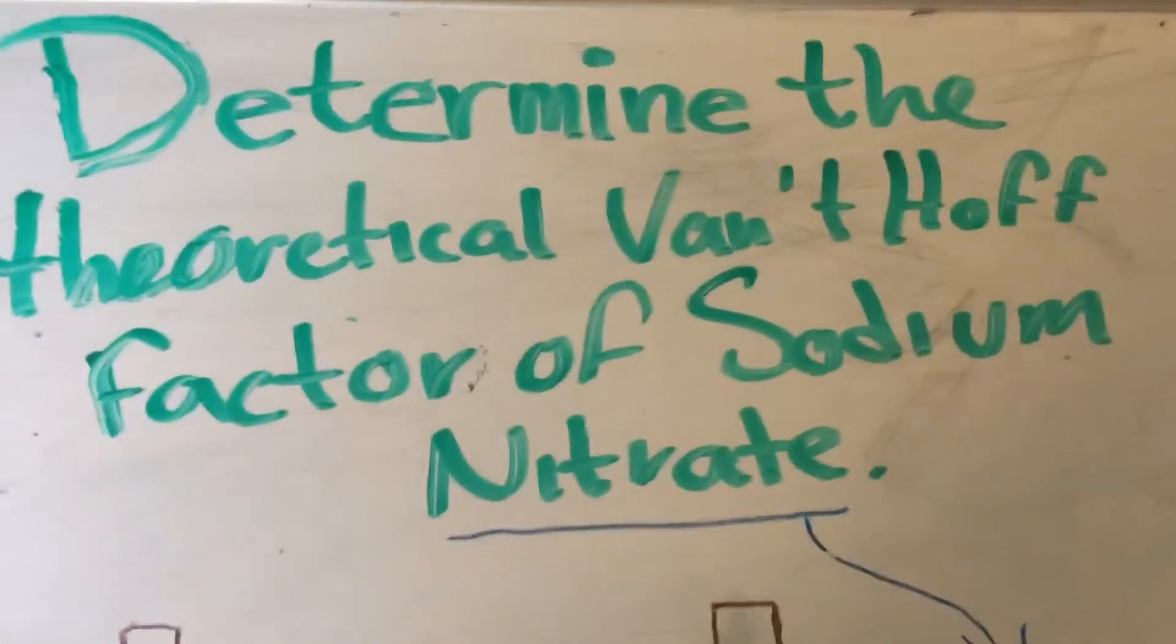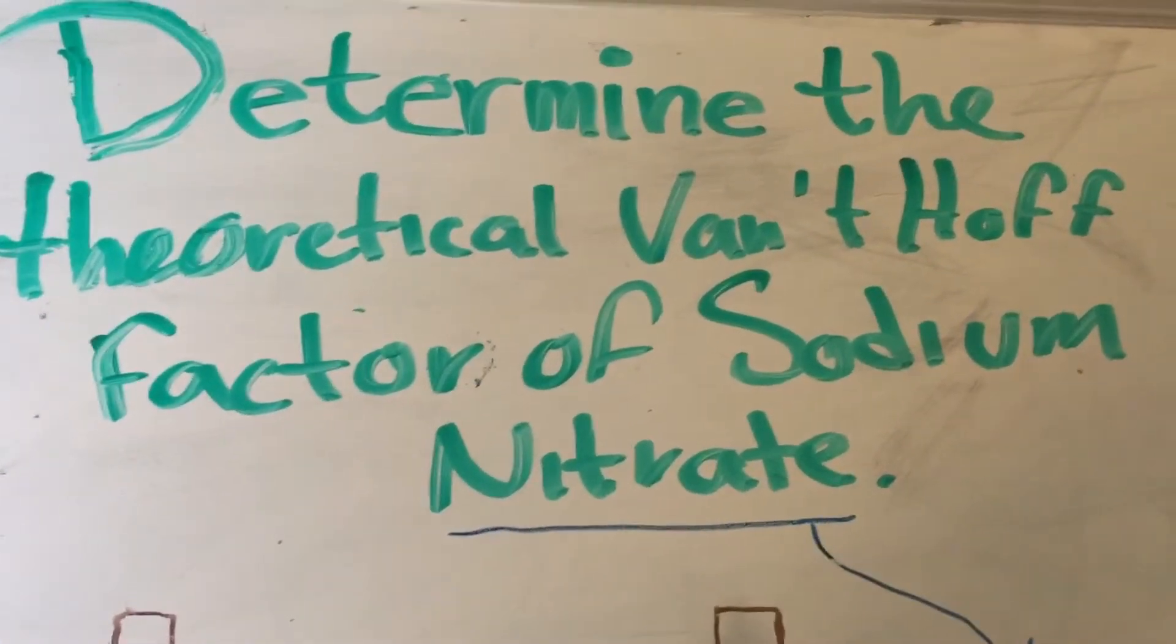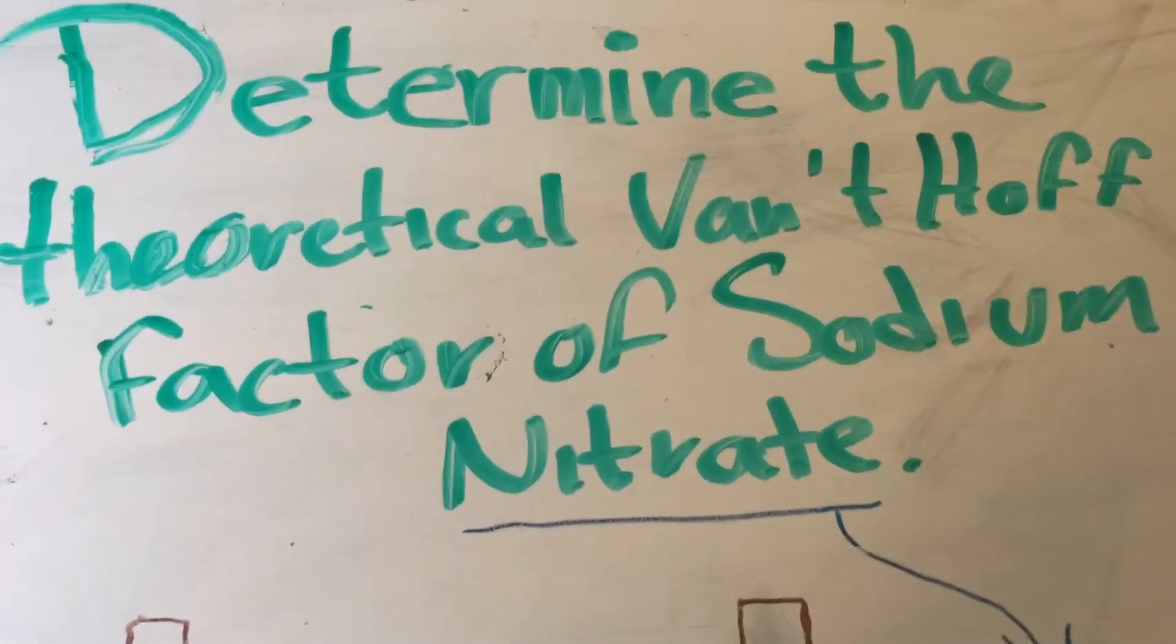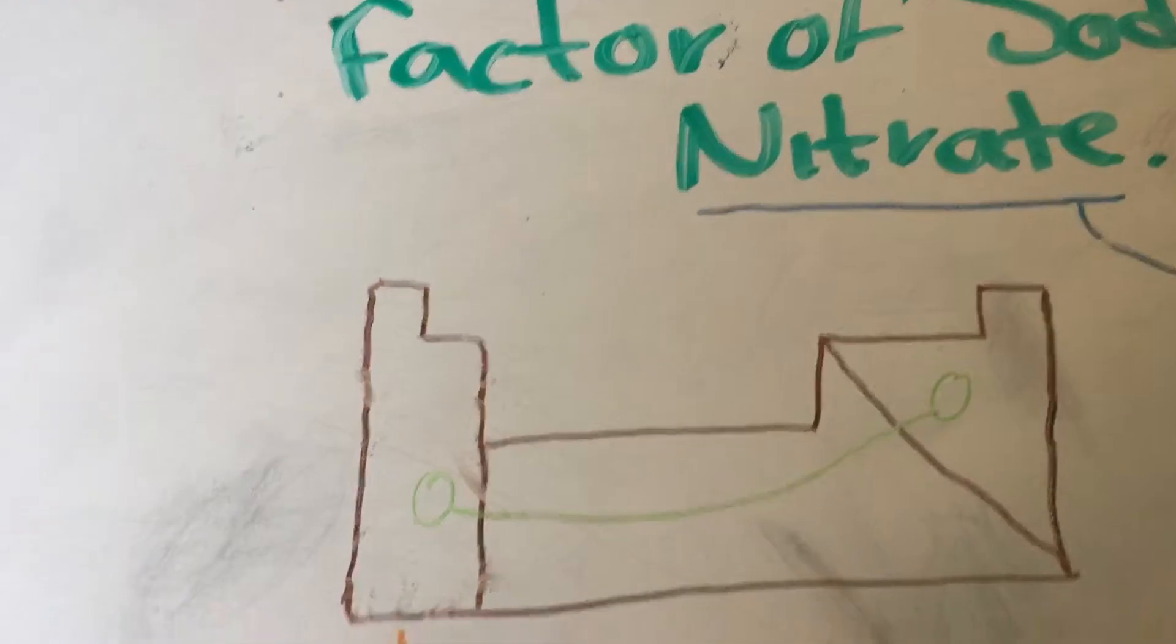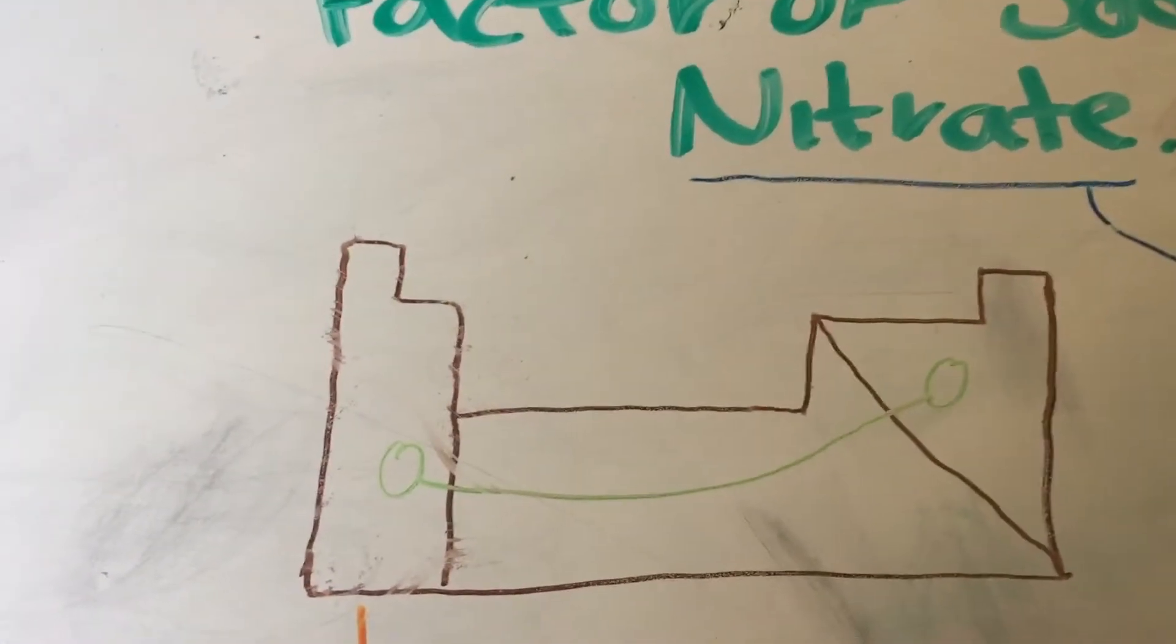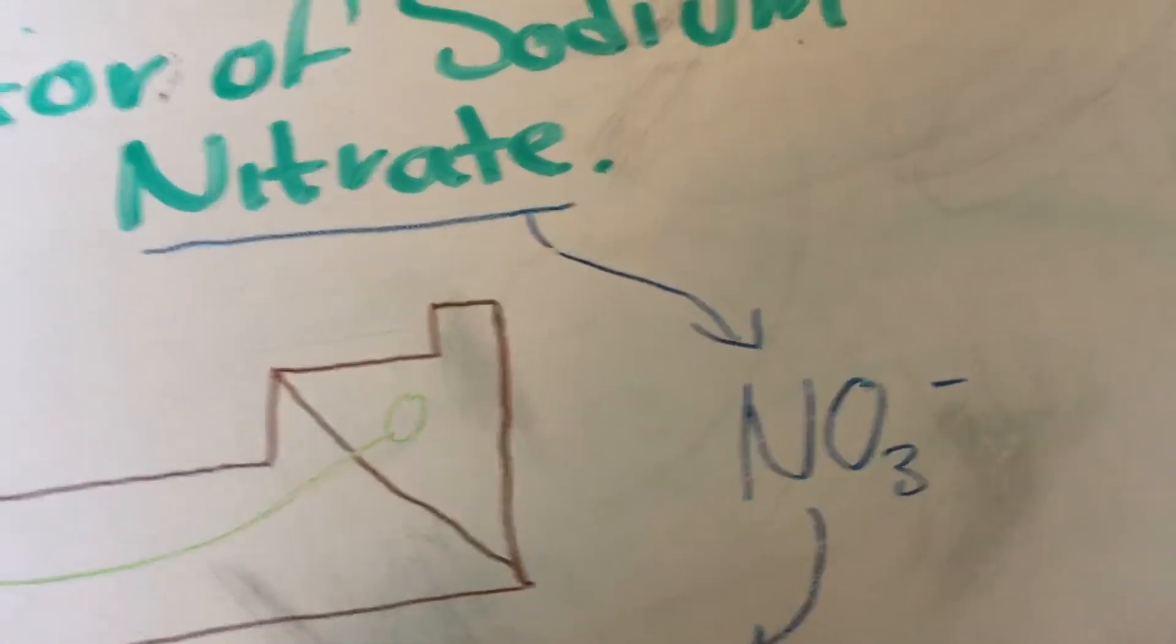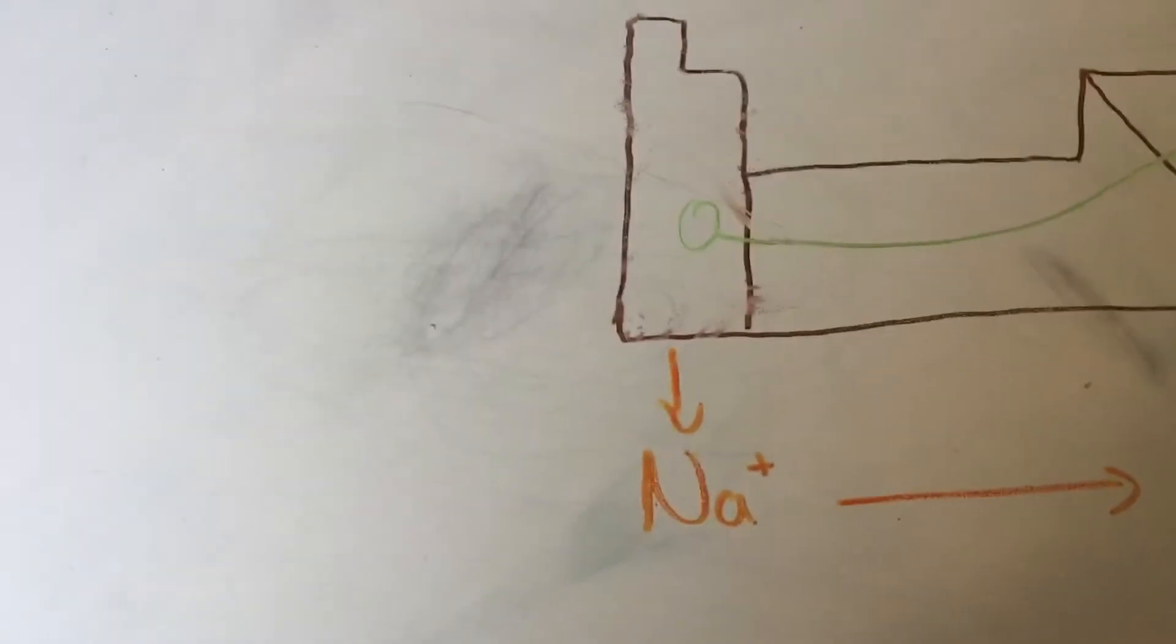In our case we're working with sodium nitrate. We're working with a metal from group two and a polyatomic ion. Usually when this happens it's a group one or two metal and a non-metal, but since we're already working with a polyatomic ion this is still going to work. It's still an ionic bond.